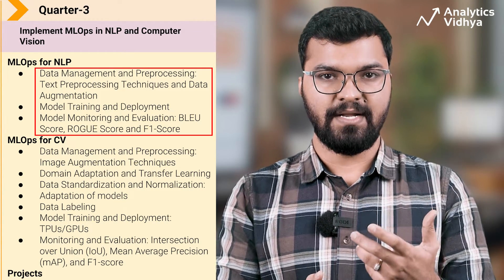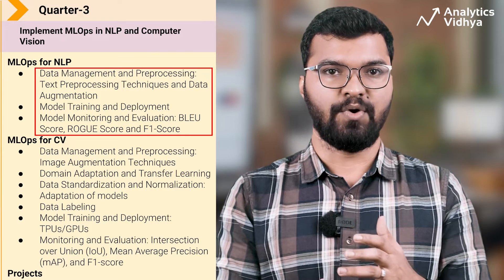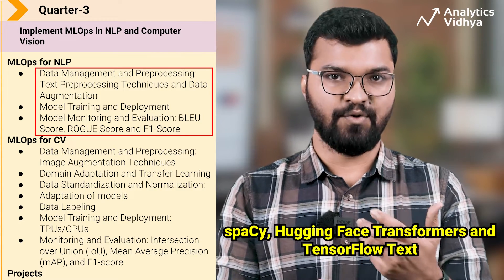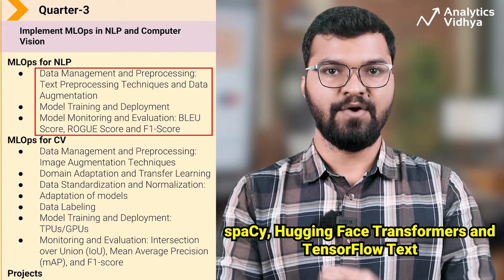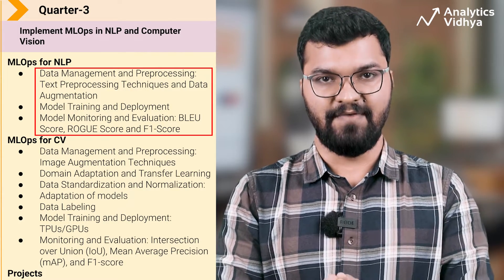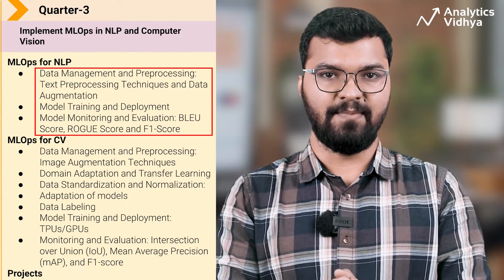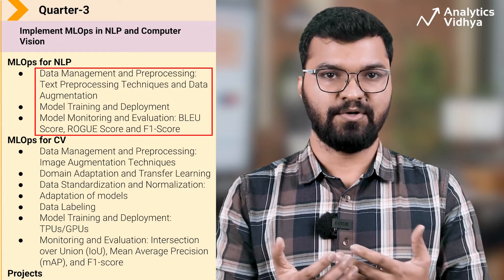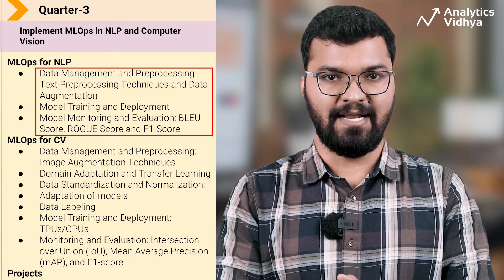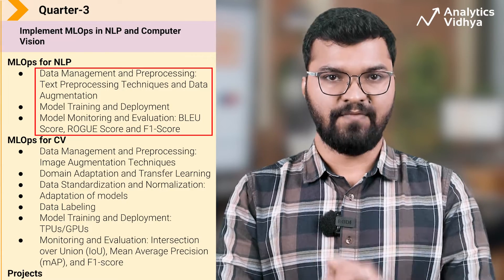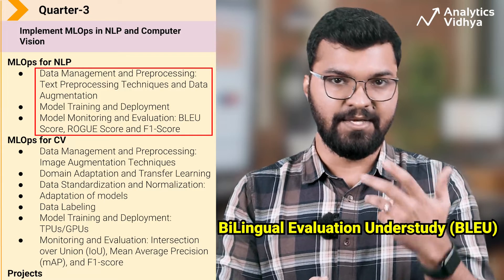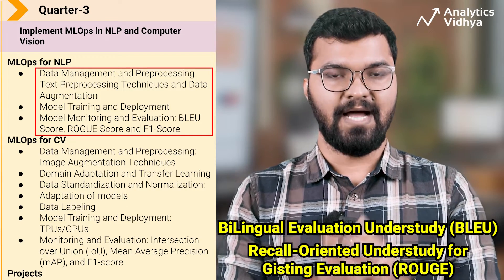The second area is model training and deployment. Learn to train models with NLP-specific frameworks like spaCy, Hugging Face Transformers, and TensorFlow Text for efficient NLP training and development. Cover model serving for NLP applications by exploring deployment options like APIs, microservices, and containerization. For monitoring and evaluation, focus on NLP-specific metrics like BLEU, ROUGE, and F1 score.